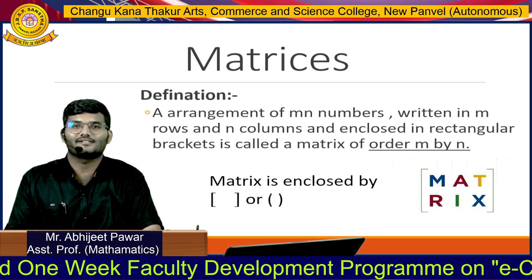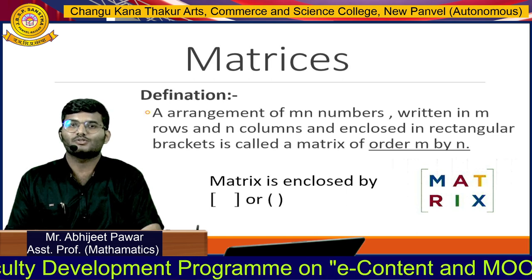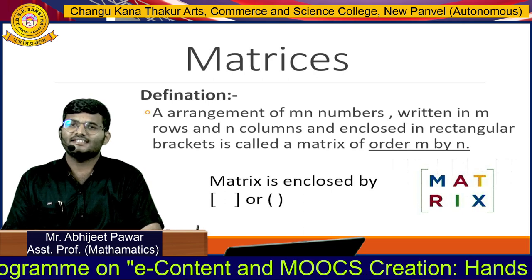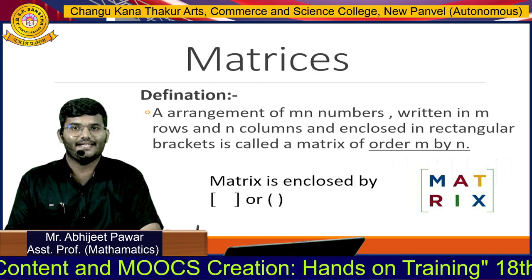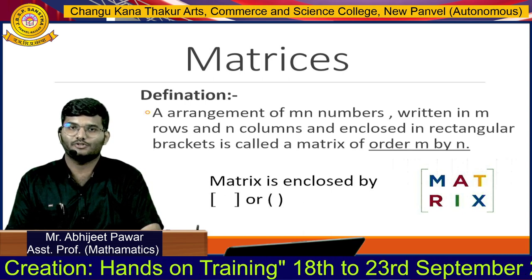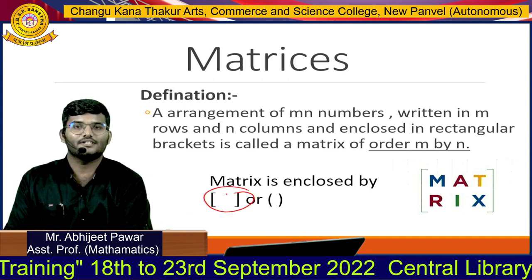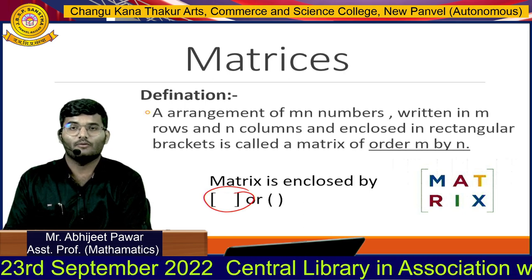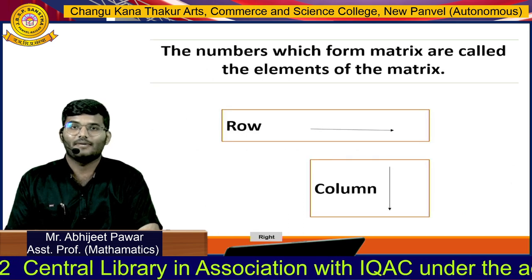What is the definition of matrices? An arrangement of m×n numbers written in m rows and n columns and enclosed in rectangular brackets is called a matrix. In general, the order is known as m by n, and the matrix is enclosed in square brackets. Those are the notations we use. In many books or computer applications we use various symbols — that is the basic meaning of matrices.